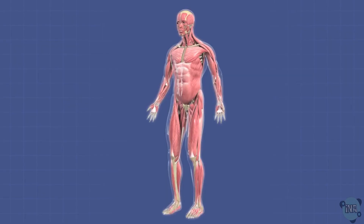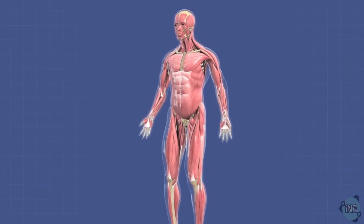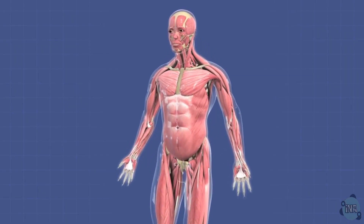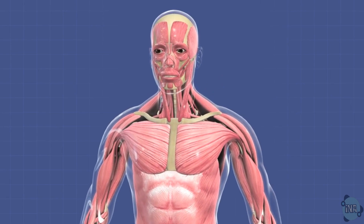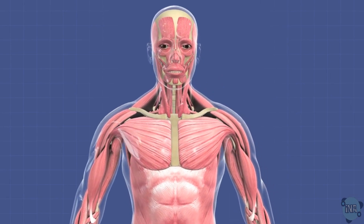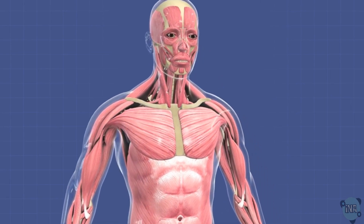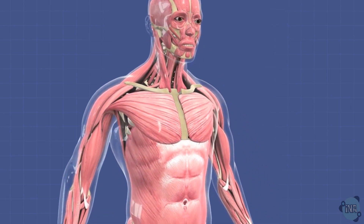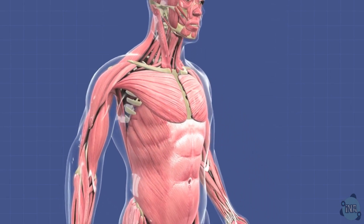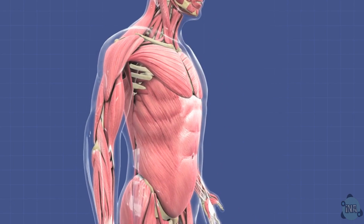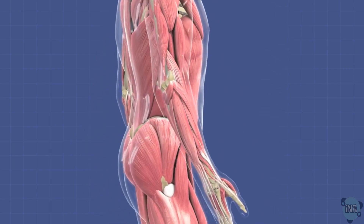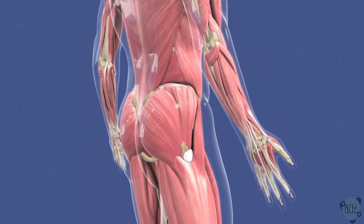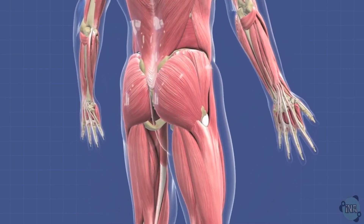Muscle tissue, composed of intricate bundles of cells, comes in various forms. Skeletal muscle, with its striated appearance, is under our conscious control, allowing us to move voluntarily and with precision.